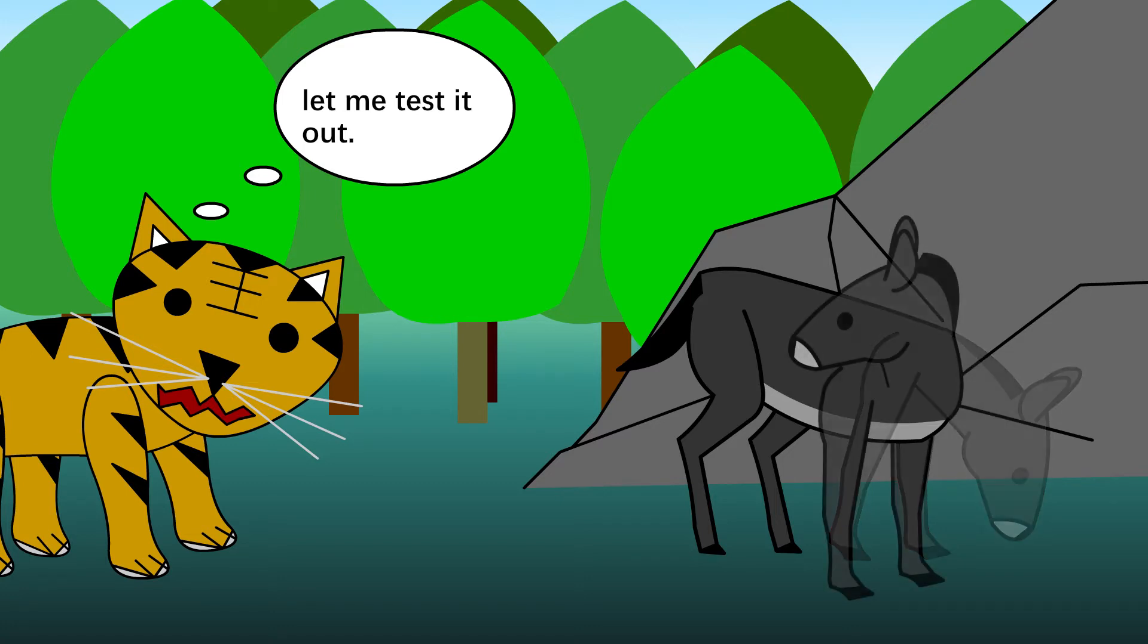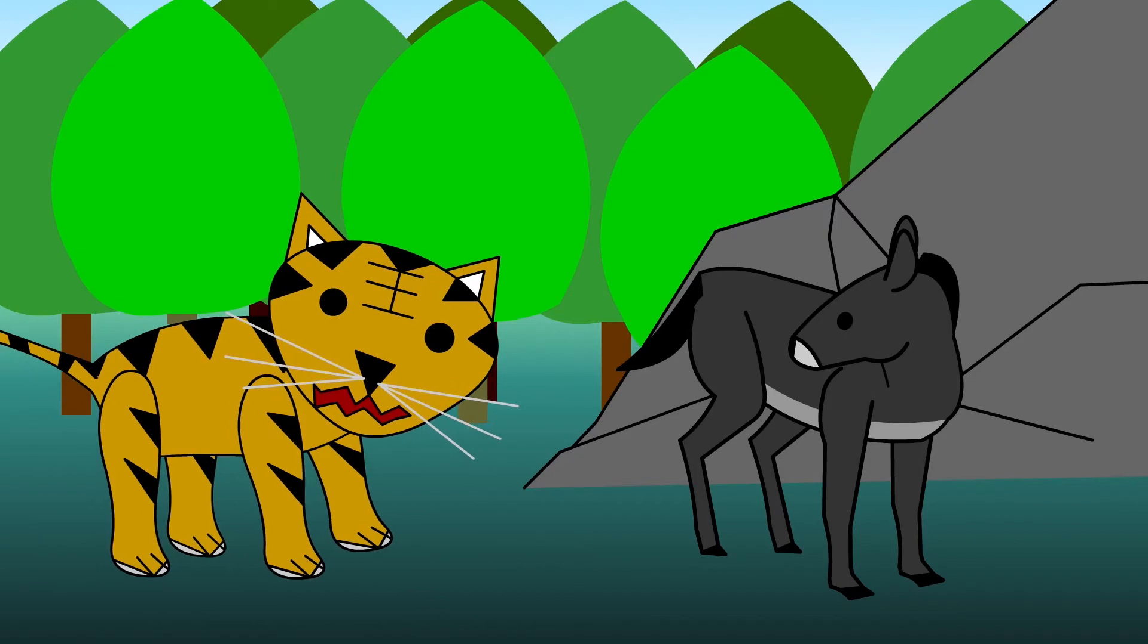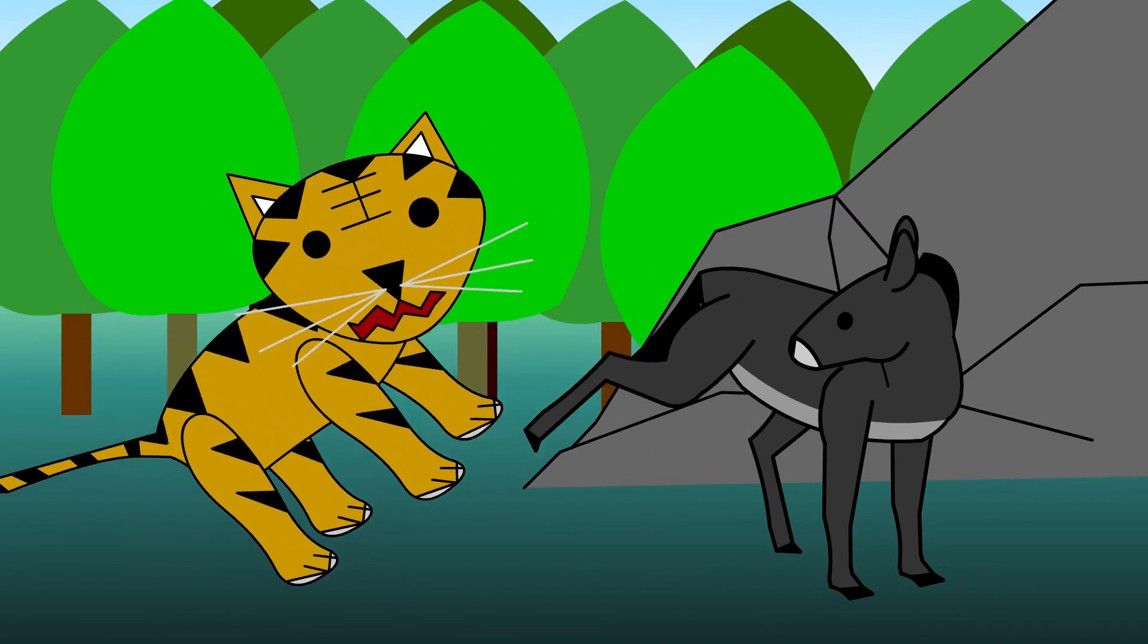The tiger thought, I wonder does it have any hidden power? So the tiger went up to the donkey, and the donkey kicked the tiger with its hind leg.